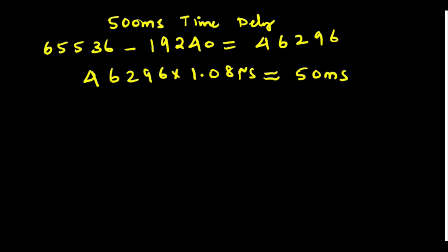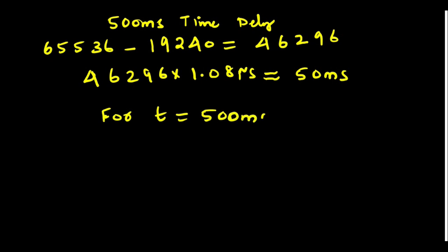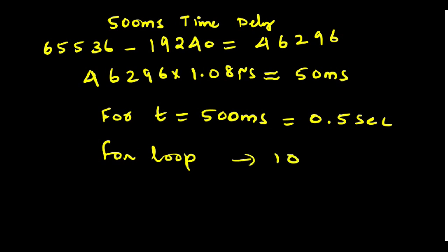For a 500 millisecond delay (0.5 seconds), we use a for loop and repeat the 50-millisecond timer function 10 times: 10 × 50 milliseconds = 500 milliseconds.